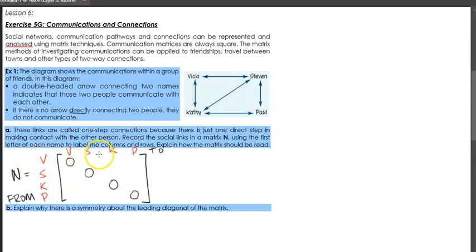Now from Vicky to Stephen, in this case, there's one way that Vicky will talk to Stephen. There's one way that Vicky will talk to Cathy, but there's no direct link from Vicky to Paul. There's no arrow there, so this will be dictated by zero. From Stephen to Vicky, again there'll be one. Because remember there are two arrows, it's a two-way arrow. So even though Vicky talks to Stephen, we also know that Stephen talks to Vicky.